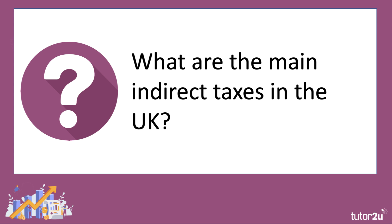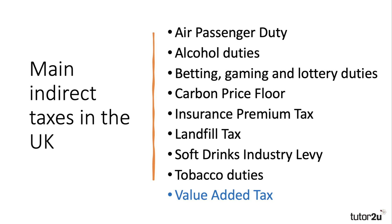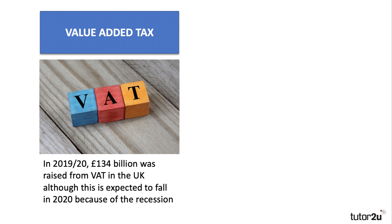Here are the main indirect taxes in the UK, listed alphabetically. If you know these nine you're in great shape — these are the biggest indirect taxes in the UK, ranging from air passenger duty all the way through to VAT, which is the biggest single indirect tax.